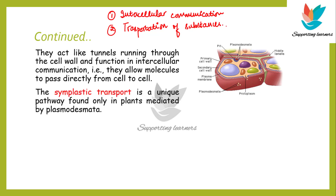There is a very important transport pathway in plants which is very unique to plants — that is called the symplastic transport. This is a very important unique type of transport in plants; water transport occurs through this pathway. When you give water to roots, how does that water move through the layers of roots? This is explained by the transport pathway called the symplastic transport.